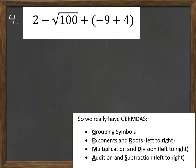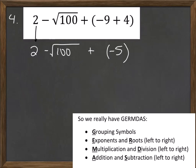Let's look at number four. First we look for grouping symbols. We have negative nine plus four in parentheses, so that's the first thing we evaluate. Negative nine plus four is negative five. I'm keeping the parentheses so I don't get confused by that negative sign. Notice I'm taking a minute to bring everything else down: the two, the subtraction, the square root of 100, the plus sign. Take time to copy the problem every single time, working down — not across — on your paper, so it's easier to follow your work and check for mistakes.